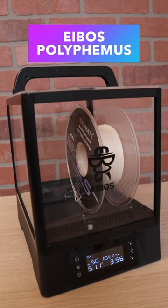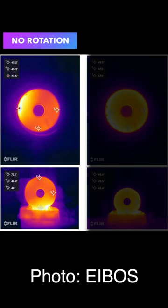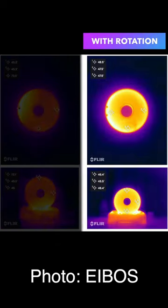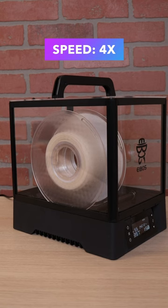The Polyphemus is a little bit different than most filament dryers in that it actually rotates the spool during the dry cycle, so instead of applying the heat only to the bottom of the spool, it's applied evenly throughout.